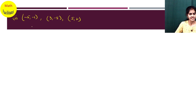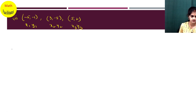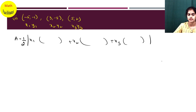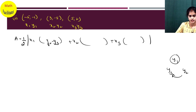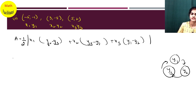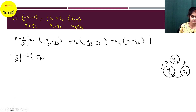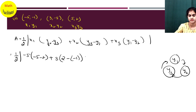Let's proceed to the next question. The next coordinates given are: (-5, -1) as x1, y1; (3, -5) as x2, y2; and (5, -2) as x3, y3. Area of triangle equals half modulus of: x1 into (y2 minus y3) — x1 is -5, y2 is -5, y3 is -2; plus x2 into (y3 minus y1) — x2 is 3, y3 is -2, y1 is -1; plus x3 into (y1 minus y2) — x3 is 5, y1 is -1, y2 is -5.